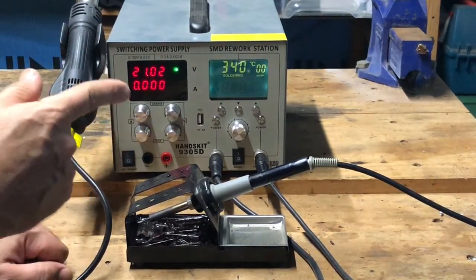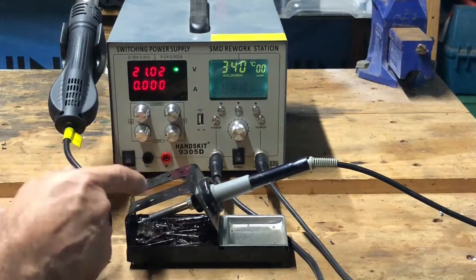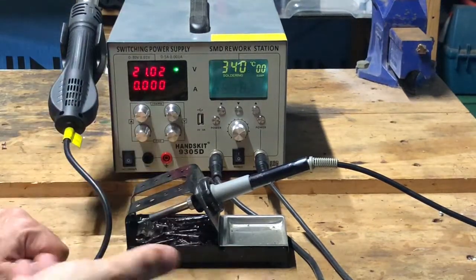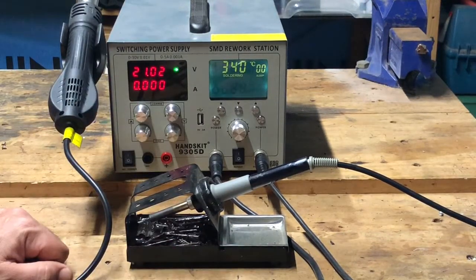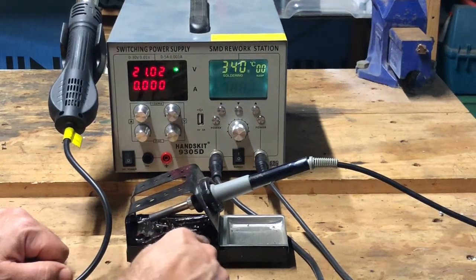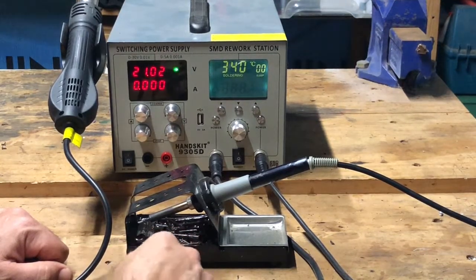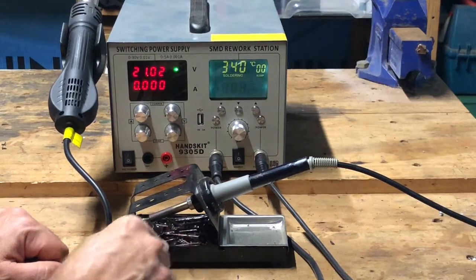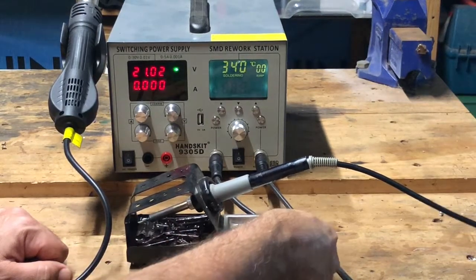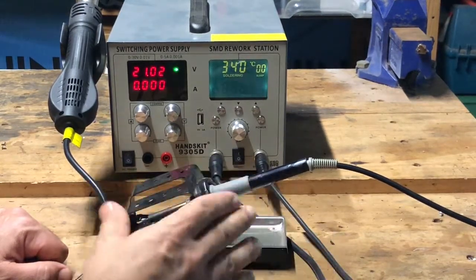I mentioned that I found this soldering stand to be too light and that it skates around, which is inconvenient. I don't know if you can see it in there, but there's a hollow inside. I filled it all up with old nails and then potted it in epoxy. It's quite heavy now and doesn't skate around. It's quite good.